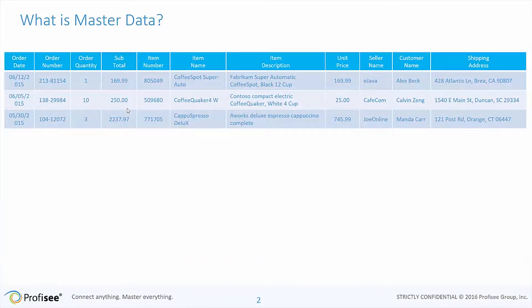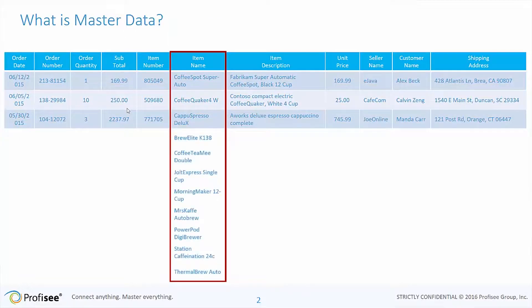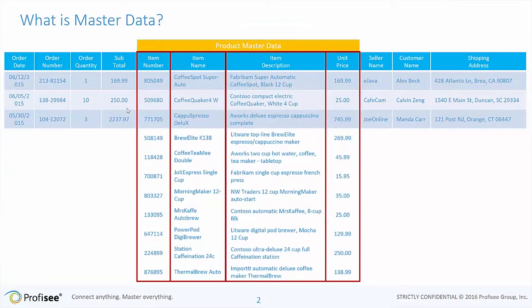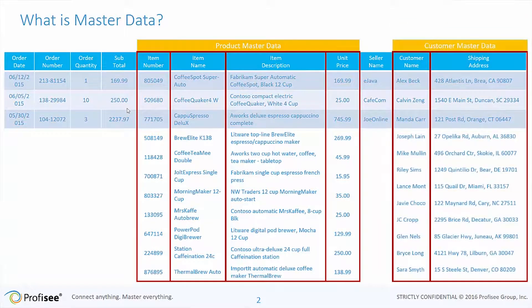We'll start off by defining what master data is. You can see here on the screen a sample set of data — these look like order transactions. That has some transactional data around the order date and quantity, but it also has data around products, customers, and partners. Embedded in here are examples of master data: the names of items, the item number, the description, the unit price — all comprising our product master data. That's one example of a domain embedded within this data set.